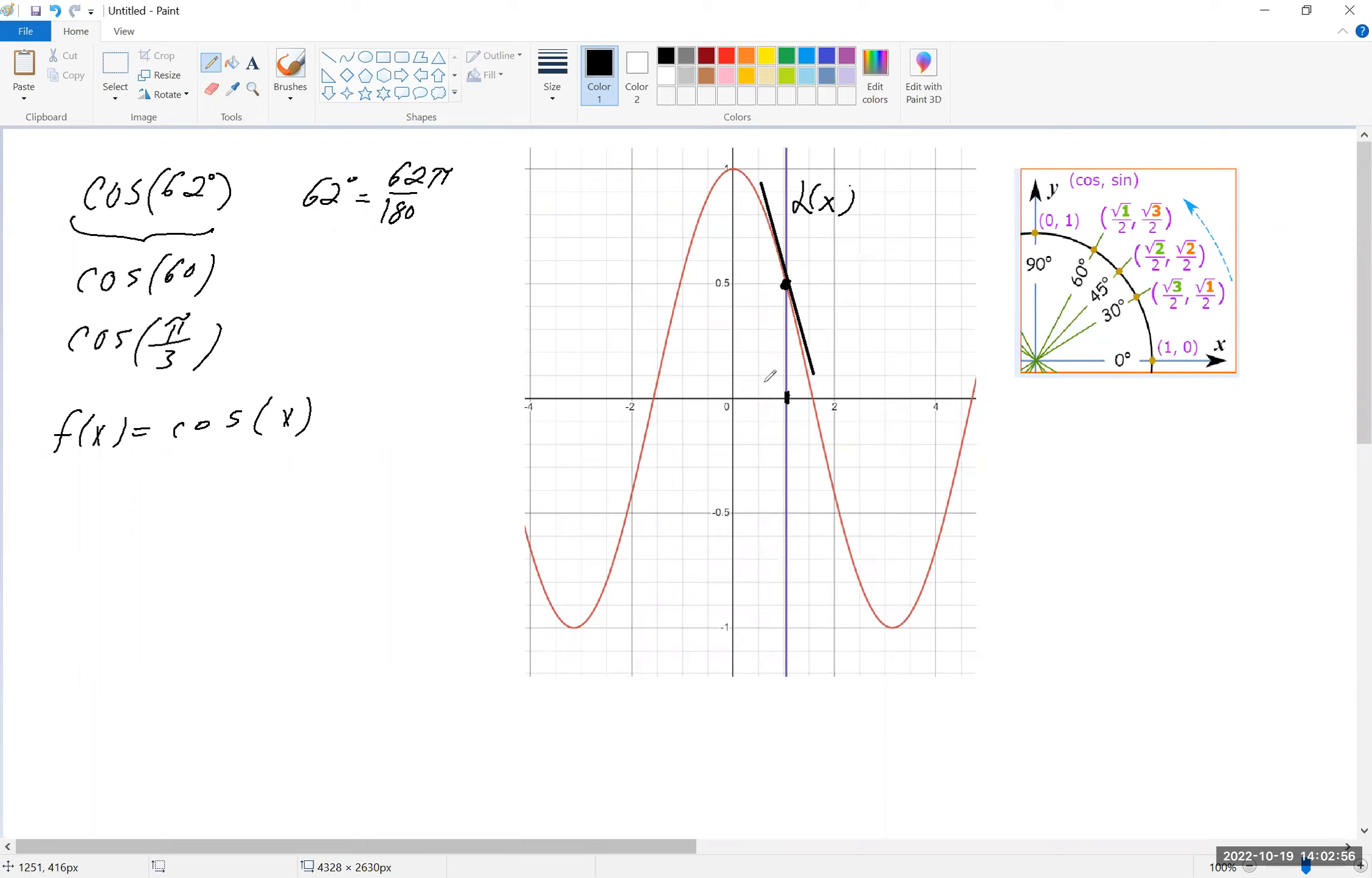And so we need to figure out what the slope of that black line is. So f prime of x is minus sine of x.